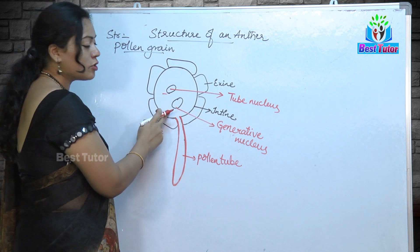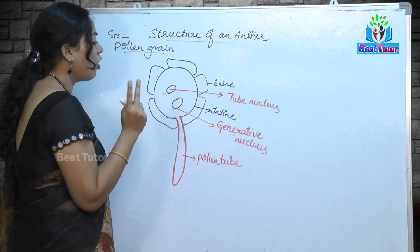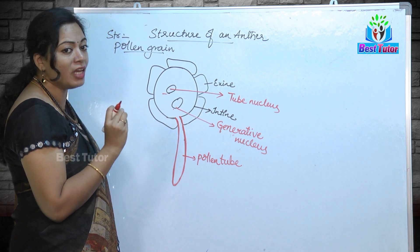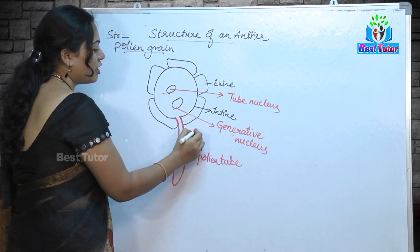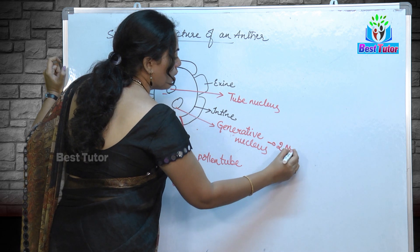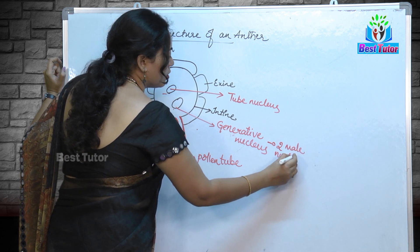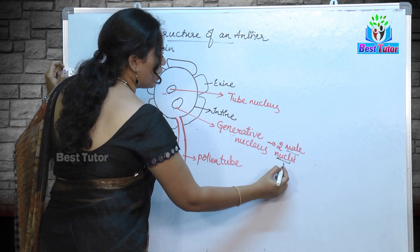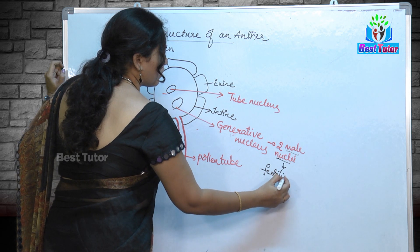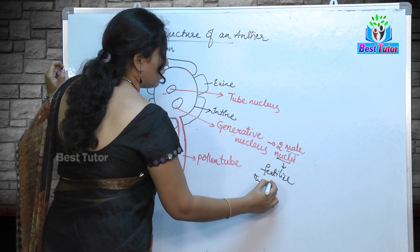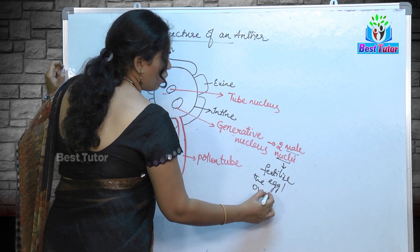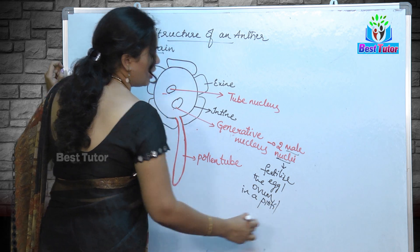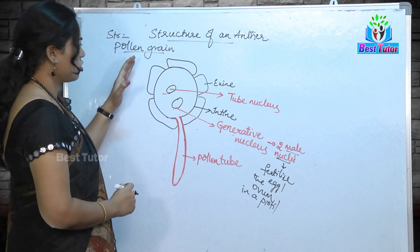The generative nucleus is going to produce two sperm nuclei, also called male nuclei, which are going to fertilize the egg or ovum in the pistil or gynoecium of the flower.